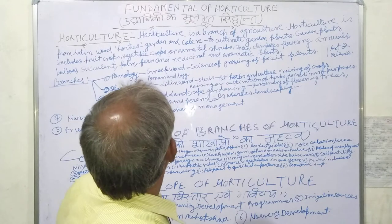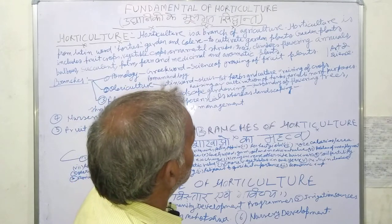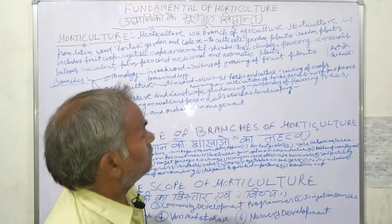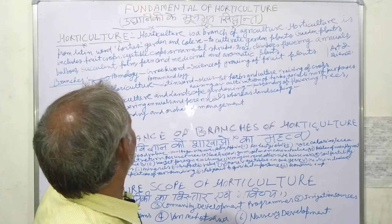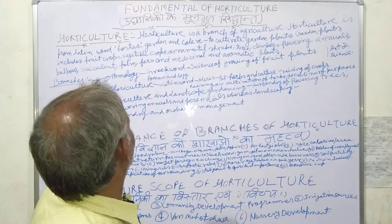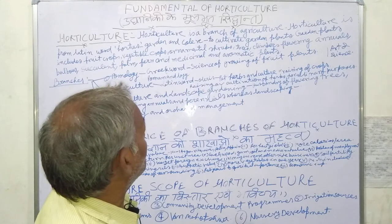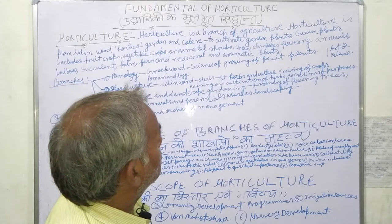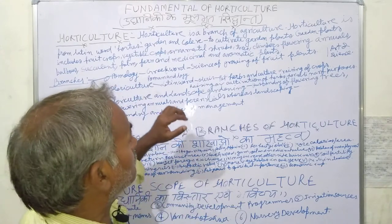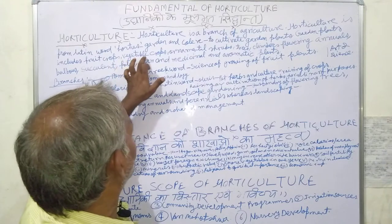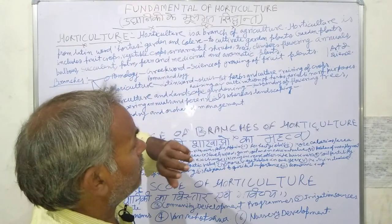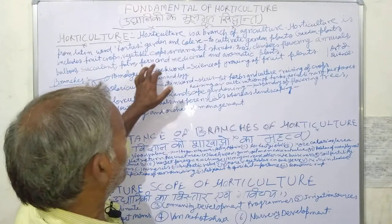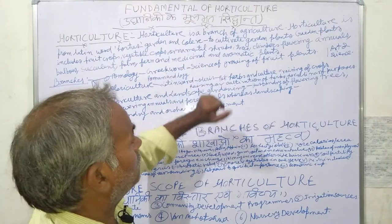What is Horticulture? Horticulture is a branch of agriculture, which is derived from the Latin word 'Hortus' meaning garden and 'Cultura' meaning cultivation — to cultivate garden plants. Garden plants include food crops, vegetable crops, ornamental crops, trees, climbers, flowering plants, bulbous plants, succulents, palms, ferns, and medicinal and aromatic plants.